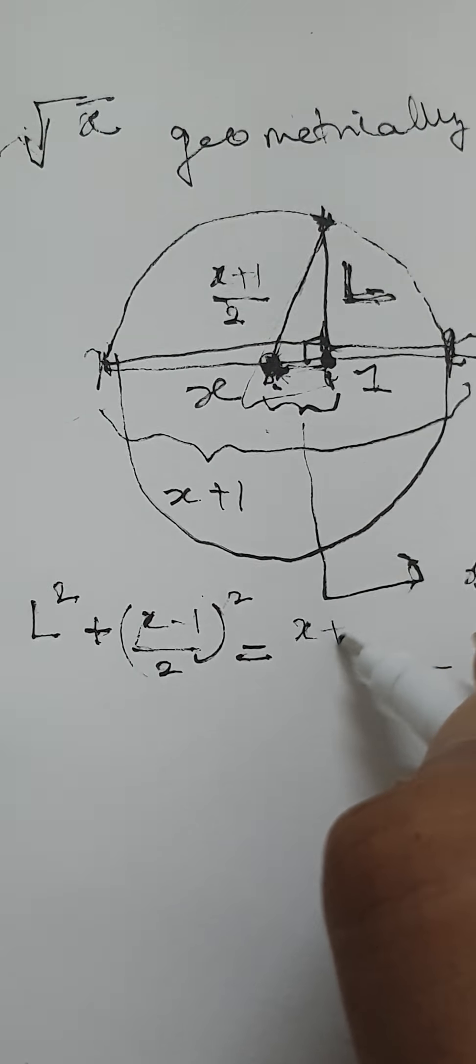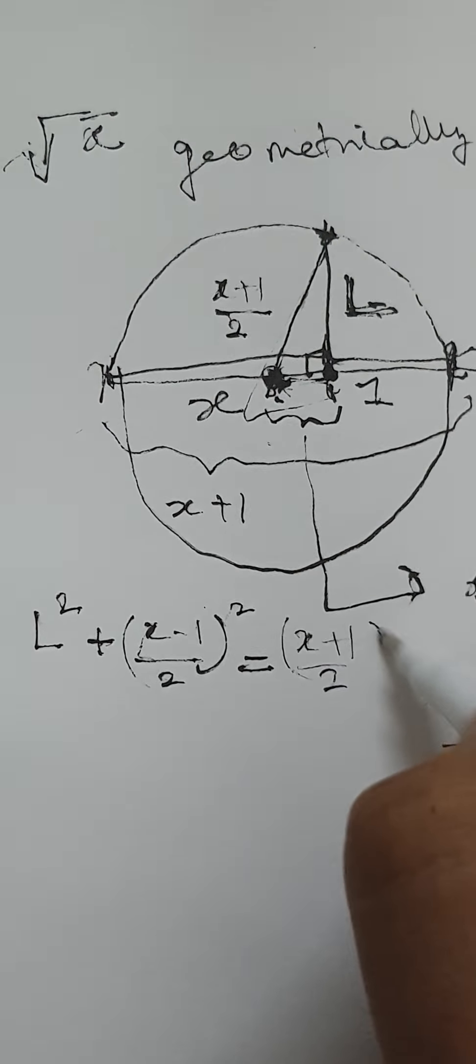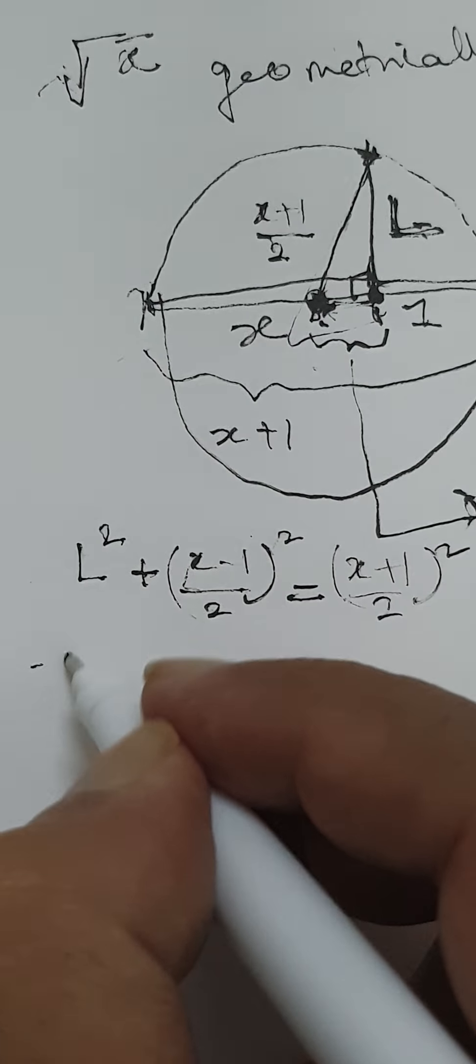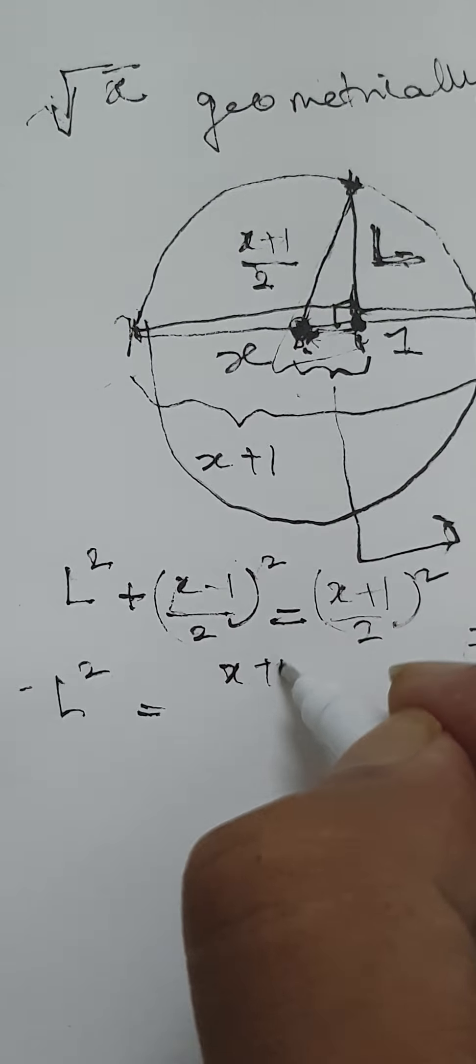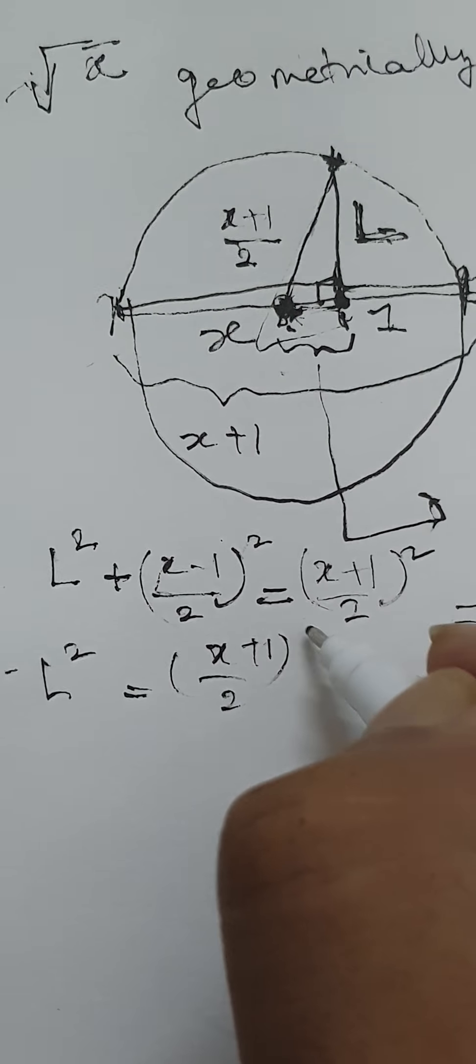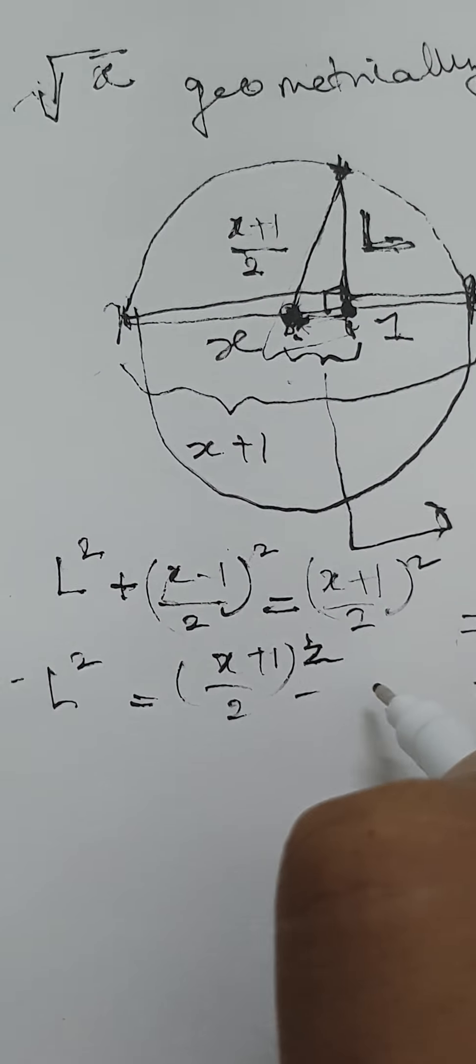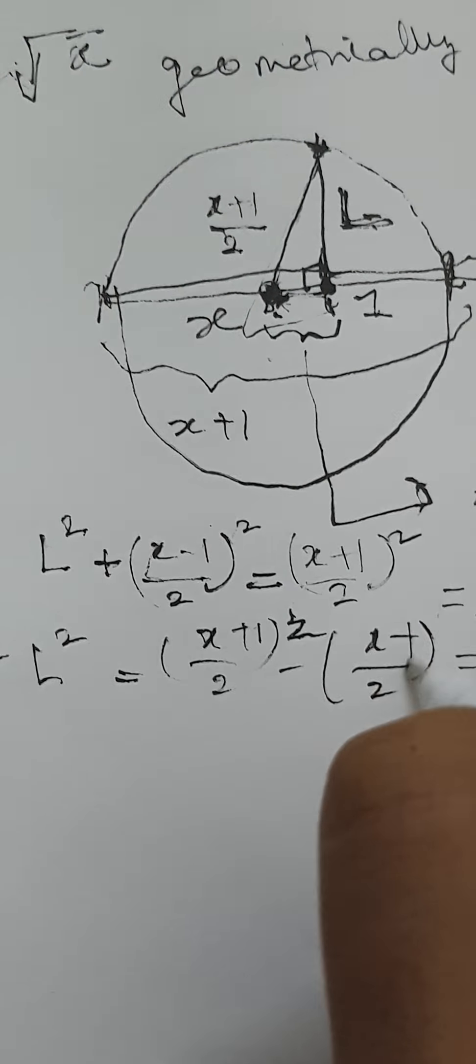So that's x plus 1 by 2 squared. Therefore, l squared is x plus 1 by 2 squared minus x minus 1 by 2 squared.